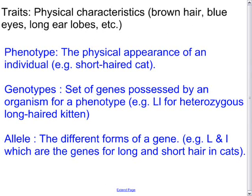Just a quick review of terminology. Traits are the physical characteristics such as brown hair, blue eyes, long earlobes, etc. Phenotype refers to the physical appearance of an individual, for example a short-haired cat. Genotype is the set of genes possessed by an organism for a particular phenotype, for example capital L, lowercase l for a heterozygous long-haired kitten.